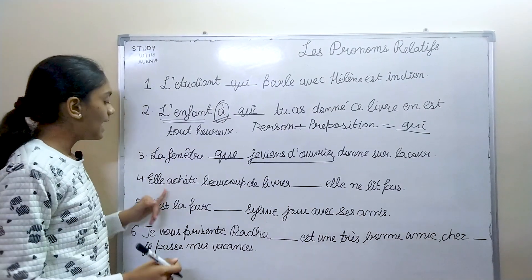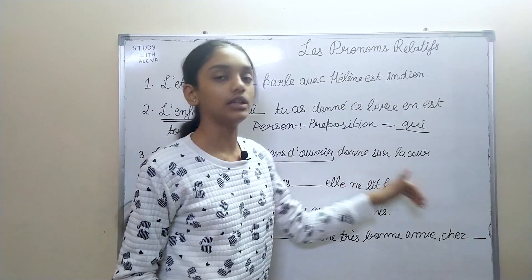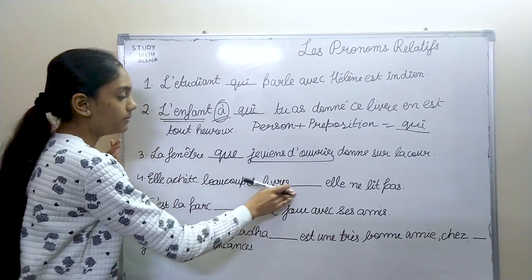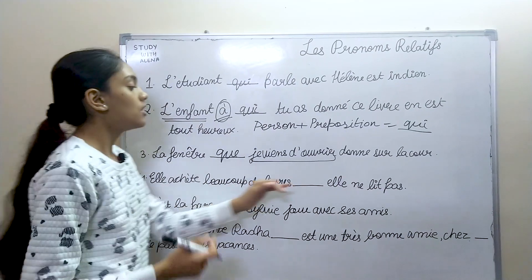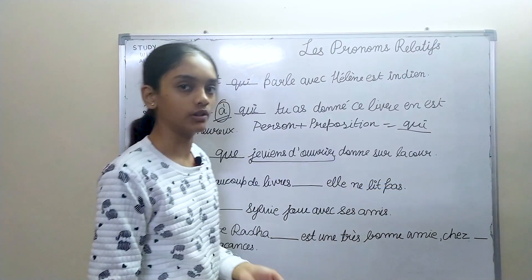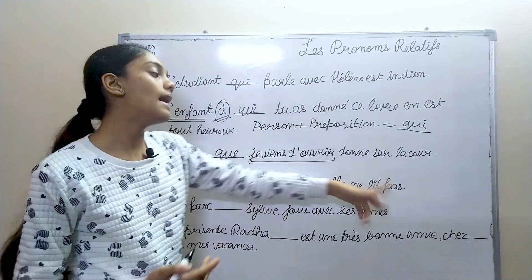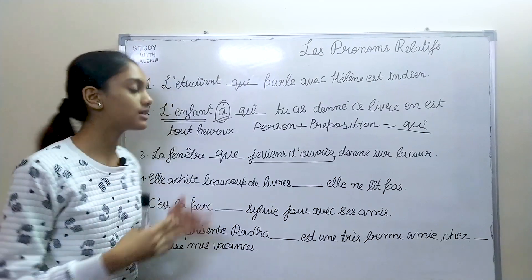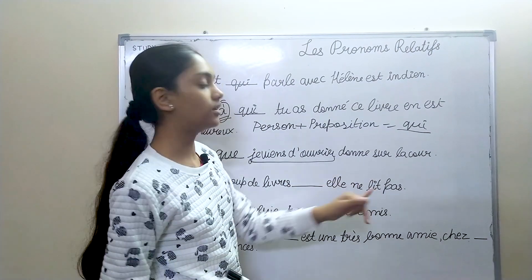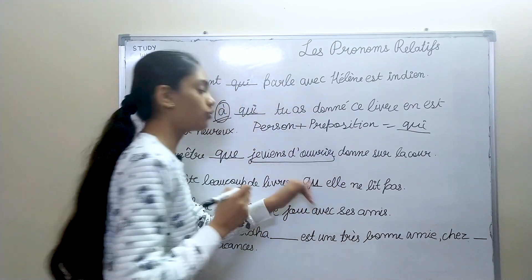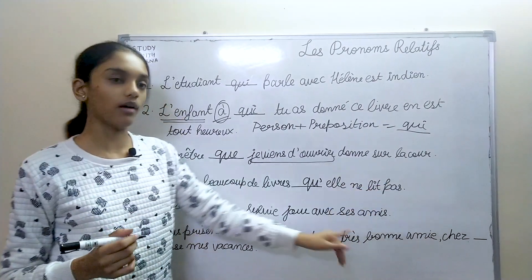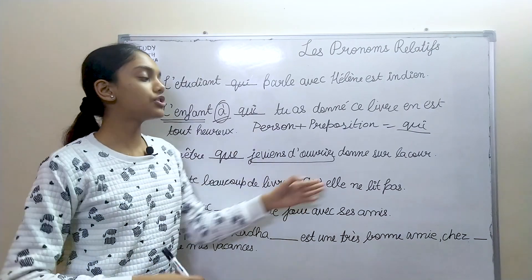Fourth: "Elle achète beaucoup de livres ___ elle ne lit pas." The repeated word is 'livre' — book — and it is the object, so we use que. Since que is followed by 'elle' which starts with a vowel, it becomes qu'. The answer is: "Elle achète beaucoup de livres qu'elle ne lit pas" — she buys many books which she does not read.